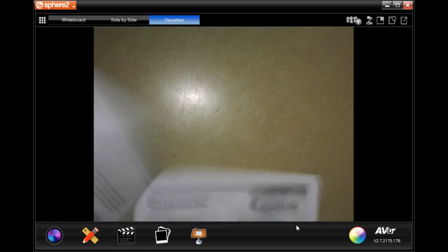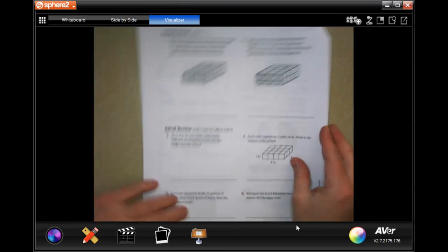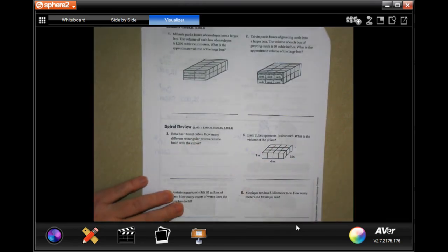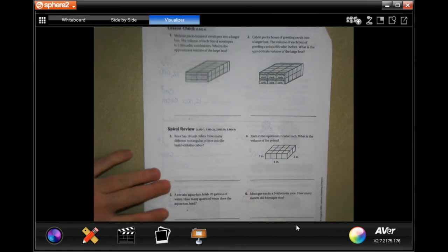We're going to go over on the back where you guys are going to do the lesson check, just like always. Rosa has 16 unit cubes. How many different rectangular prisms can she build with the cubes?